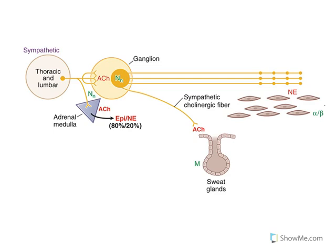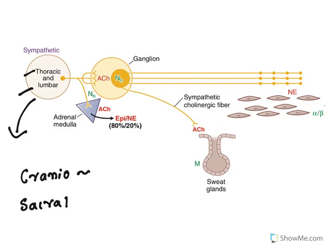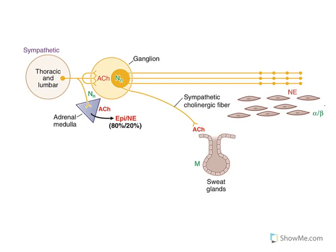The sympathetic system is also known as the thoracic and lumbar system because sympathetic neuron outflow starts from the thoracic and lumbar regions of the central nervous system. In contrast, the cholinergic system is known as craniosacral because those neurons start from the cranium and sacral region. The sympathetic system is a two-neuron system: a short preganglionic neuron and a longer postganglionic neuron.